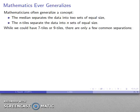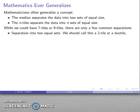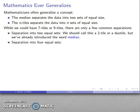While we could have seven tiles or nine tiles, there's actually only a few commonly used separations. So I could separate the data into two equal sets. We should call this a two-tile or a duo-tile, but we just call it the median because we've already introduced that term. But a generalization,